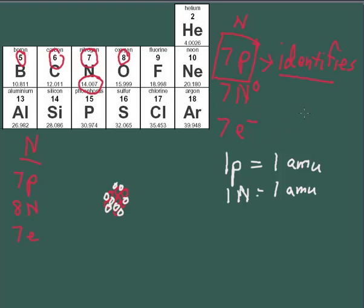And so, normally, most nitrogens are going to have seven and seven, and that's going to equal 14 amu. But the one that we just drew over here, it has seven protons and eight neutrons. So that means this nucleus, that mass is going to not be 14, but it's going to be 15 amus.